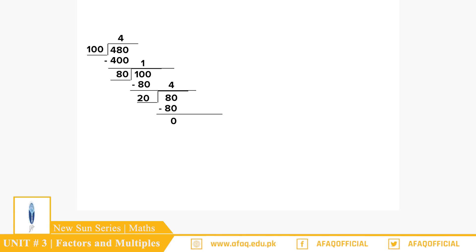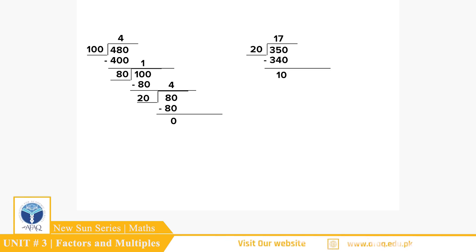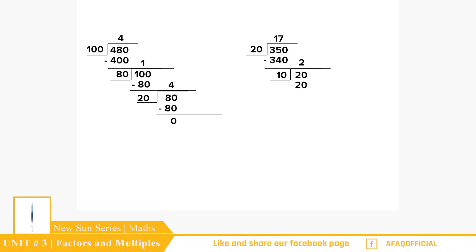20 اب divisor بنے گا۔ اگلے number 350 کے لیے: 20 کو 17 سے multiply کیا تو 340 آیا، 350 سے subtract کر کے remainder 10 آیا۔ 10 کو 2 سے multiply کیا تو 20 آیا، remainder zero ہوا۔ اس طریقے سے HCF = 10 آیا۔